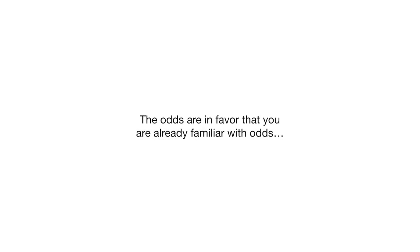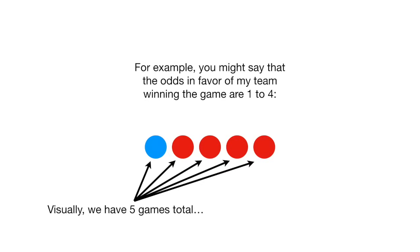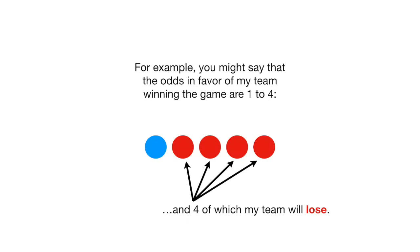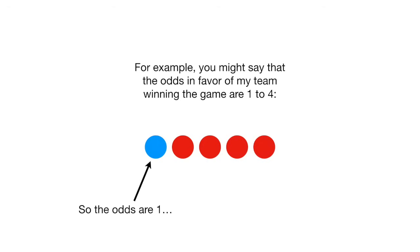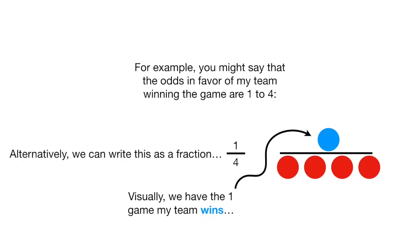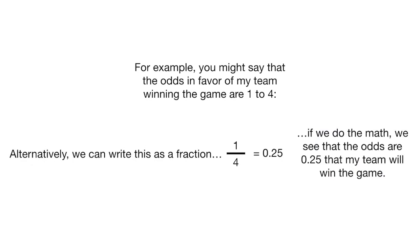The odds are in favor that you're already familiar with odds. For example, you might say that the odds in favor of my team winning the game are 1 to 4. Visually, we have five games total, one of which my team will win and four of which my team will lose. So the odds are 1 to 4. Alternatively, we can write this as a fraction: one game my team wins divided by the four games that my team loses. If we do the math, we see that the odds are 0.25 that my team will win the game.